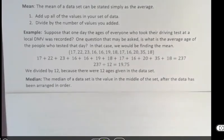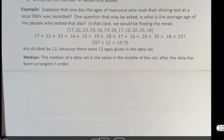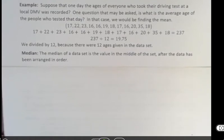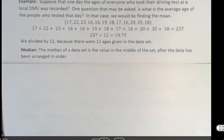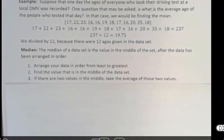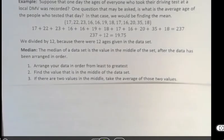So the other one we can look at is median. The median of a data set is the value in the middle of the set after the data has been arranged in order. Using our same data set from before, we'll do a median. We're going to arrange the data in order from least to greatest. Find the value that's in the middle of the data set. If there are two values in the middle, then you take the average of those two values.